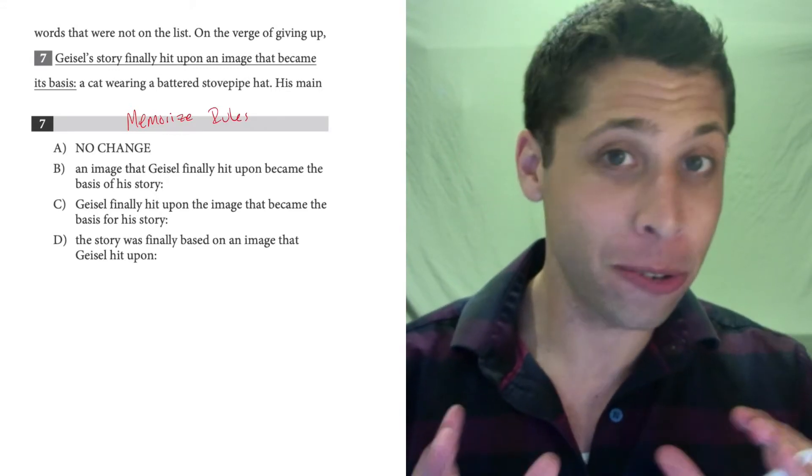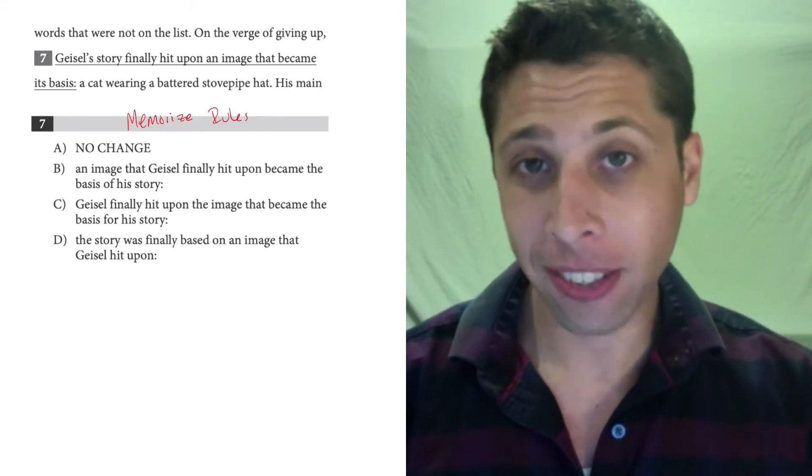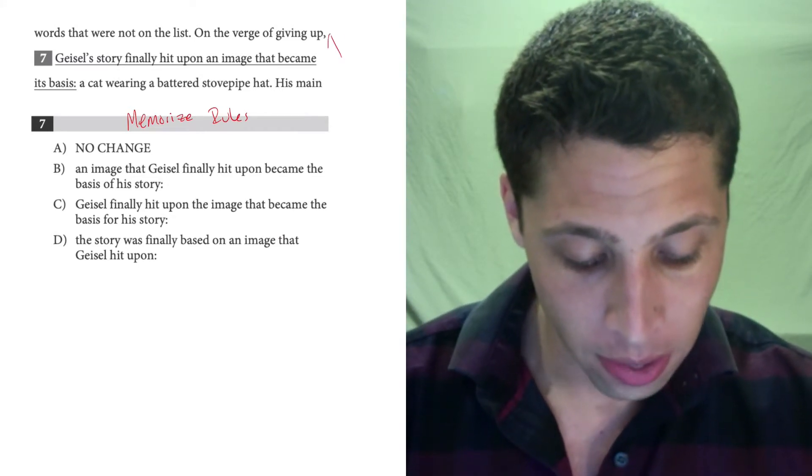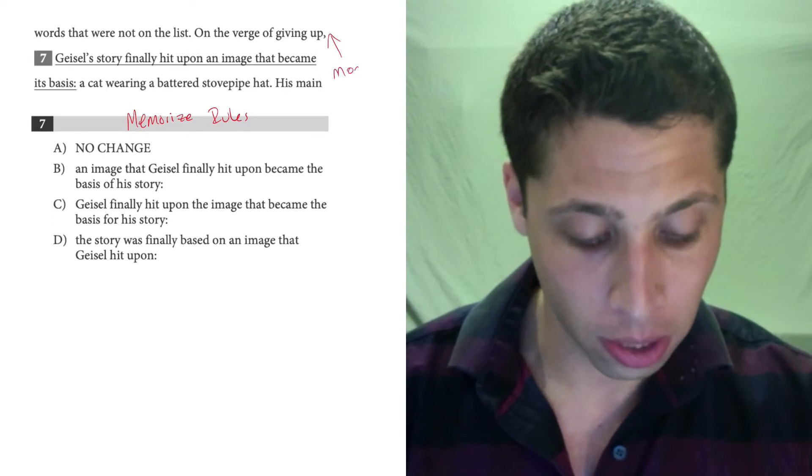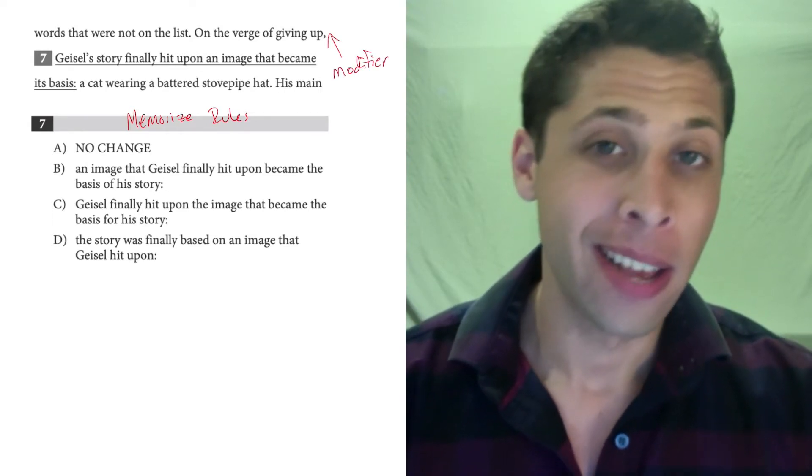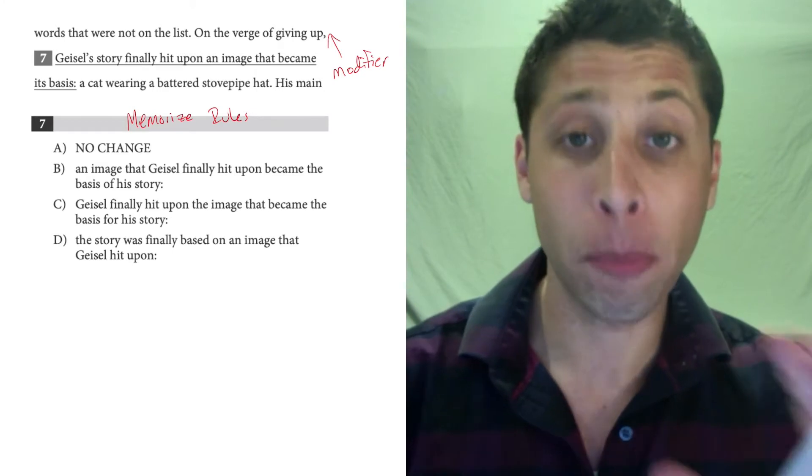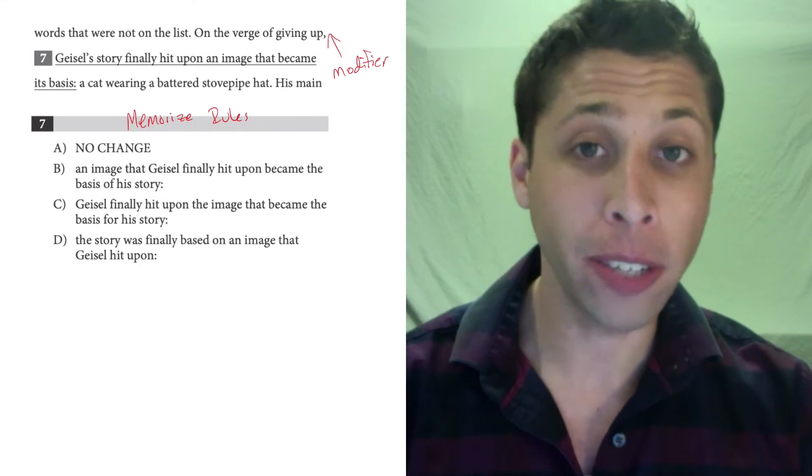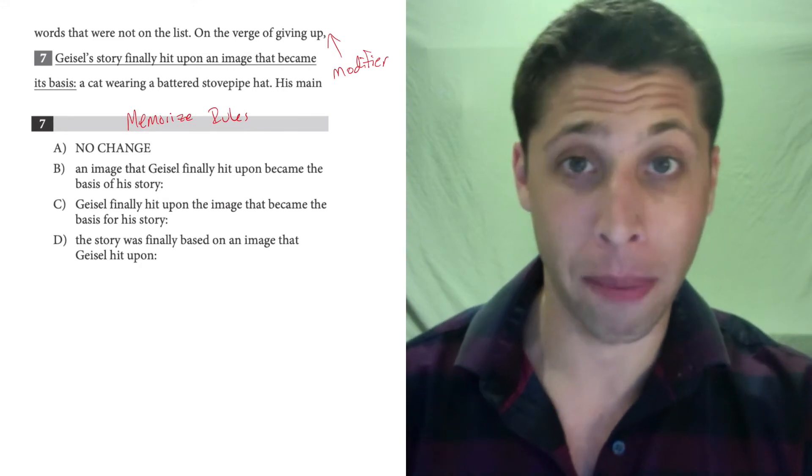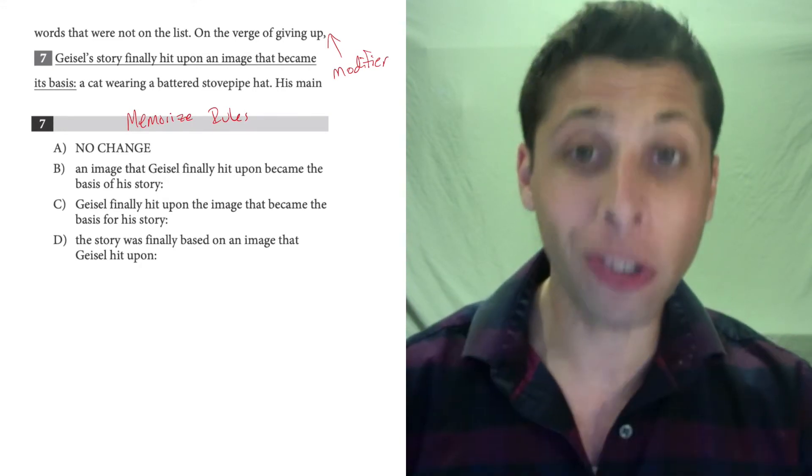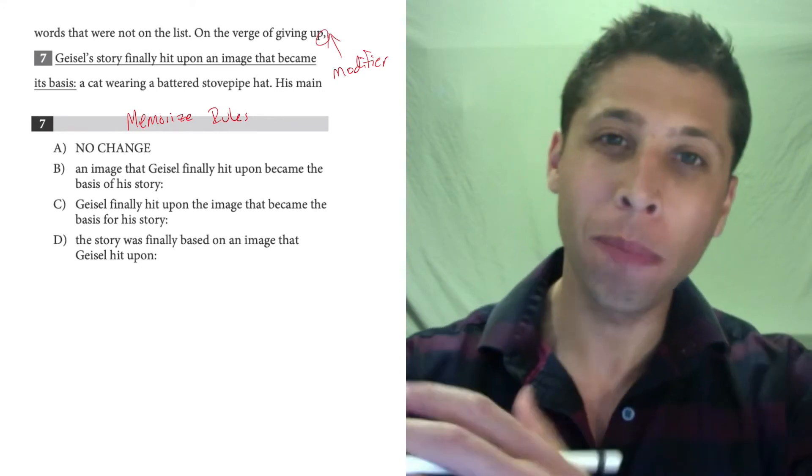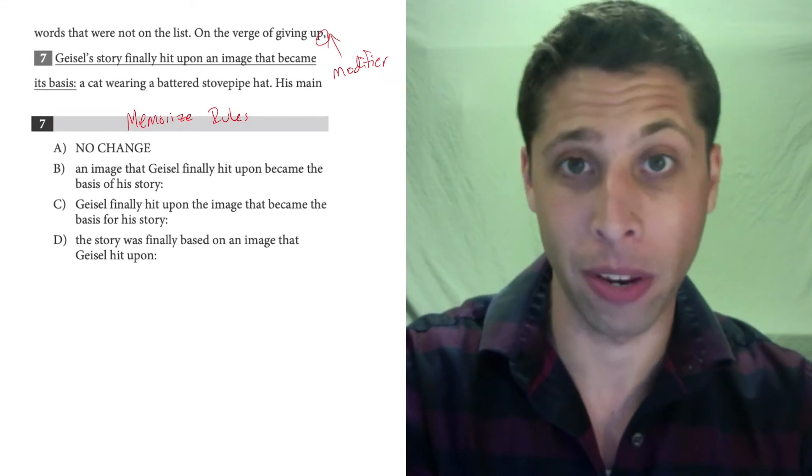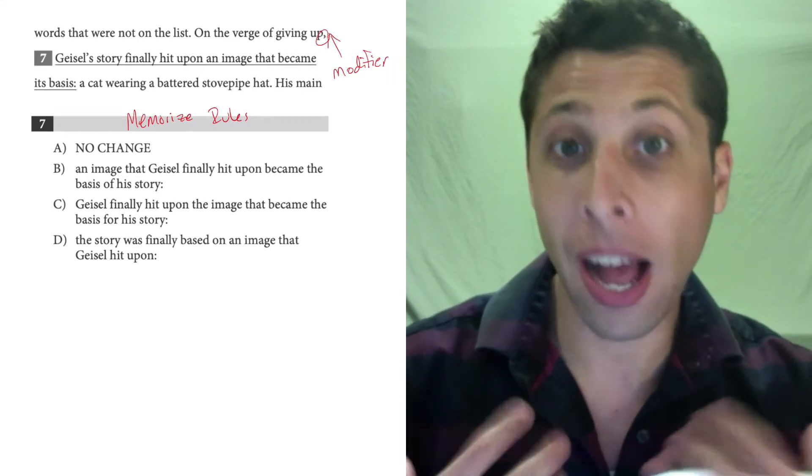So there is a rule, and if you've been practicing for a while, you might recognize this sentence structure starts with this non-underlined portion, which is a modifier. Basically it's like a little description that's going to lead into the sentence, and when we have modifiers, it's very important that whatever we're talking about has to be the first thing after that comma because we are modifying something. We need to lead into the thing we're talking about.